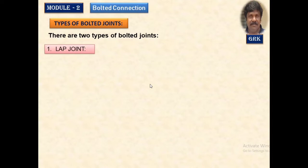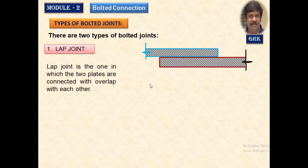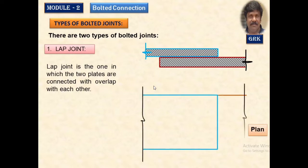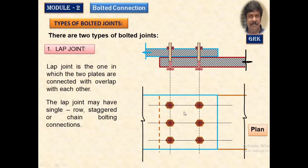Let us study about the types of bolted connections. There are two types: lap joint and butt joint, which you have already observed in the previous session. Lap joints are where two plates are joined one over the other by means of either a bolted system or welding system. In this session, we are studying the bolted connection, with bolts shown in two rows.